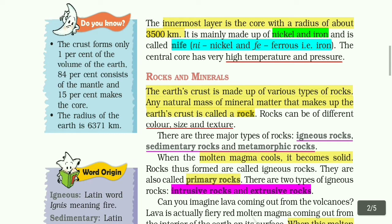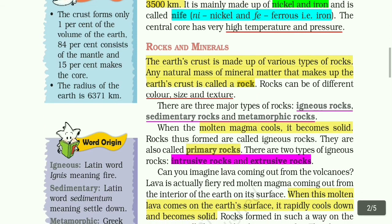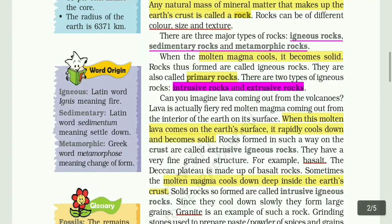There are three major types of rocks: igneous rocks, sedimentary rocks, and metamorphic rocks. When hot magma cools, it becomes solid. Rocks formed this way are called igneous rocks, also called primary rocks. There are two types of igneous rocks: intrusive rocks and extrusive rocks.